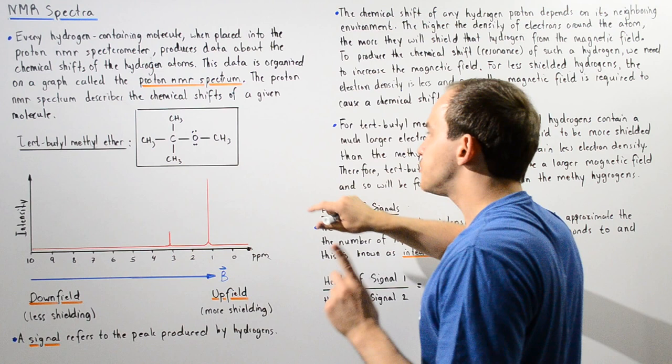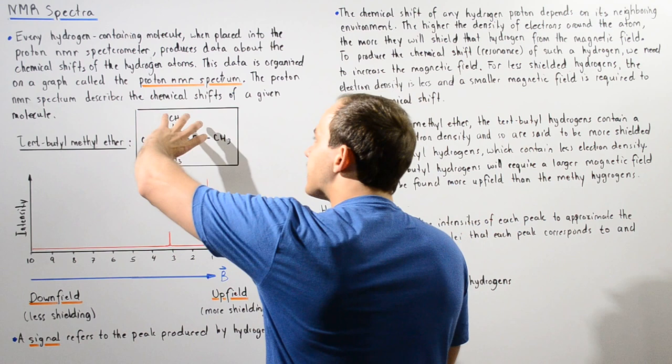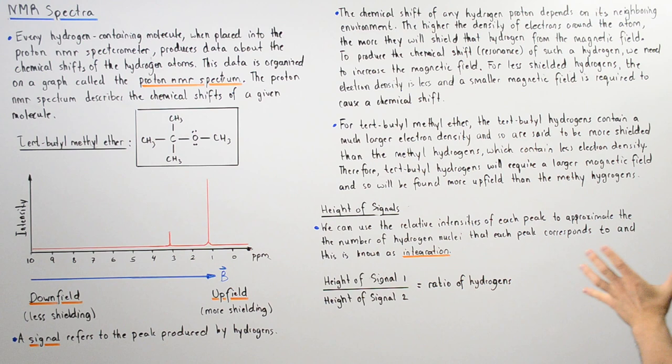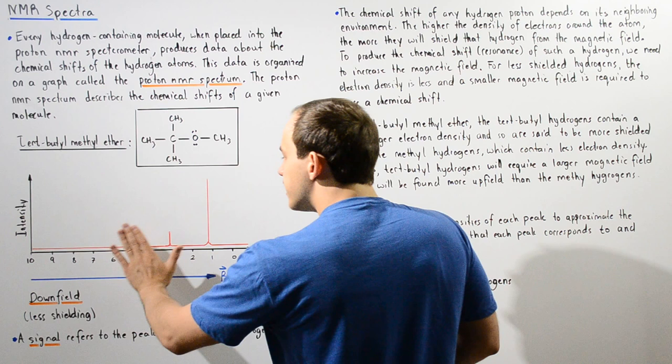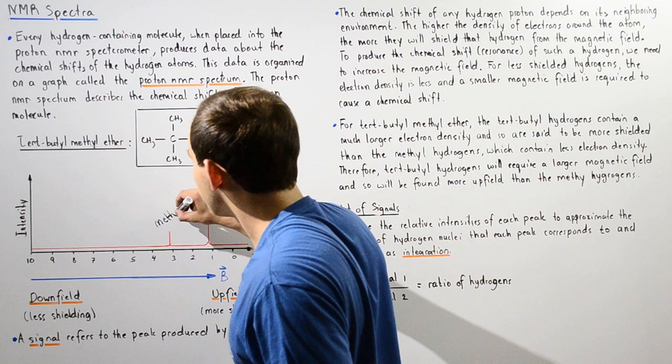For the tert-butyl methyl ether molecule, the tert-butyl hydrogens contain a much larger electron density and are more shielded than the methyl hydrogens, which contain less electron density. Therefore, the tert-butyl hydrogen atoms will be found more upfield and require a greater magnetic field. So this upfield peak corresponds to our tert-butyl hydrogens, and the downfield peak corresponds to our methyl hydrogen atoms.